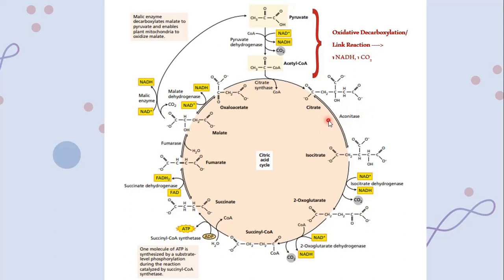The six-carbon isocitrate undergoes decarboxylation, causing removal of one carbon dioxide and formation of NADH from NAD⁺. This converts isocitrate into alpha-ketoglutarate (also called 2-oxoglutarate) — a five-carbon compound. One carbon is removed, converting the six-carbon compound into a five-carbon compound in the presence of the enzyme isocitrate dehydrogenase.